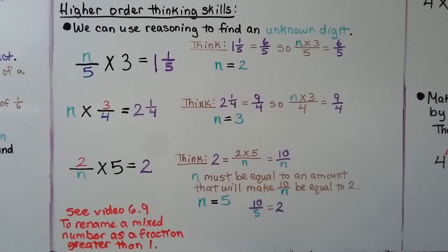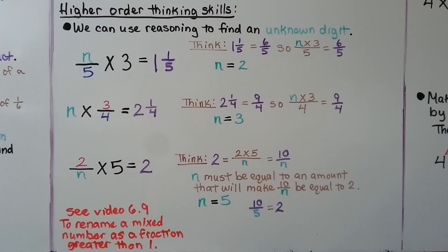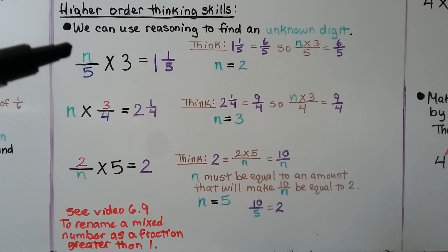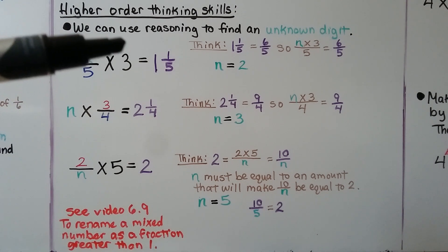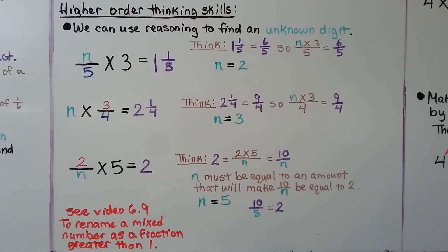Now let's try some higher order thinking skills. We can use reasoning to find an unknown digit. We're going to use n, a variable, to represent our unknown amount. We have n as a numerator, 5 as a denominator, and when multiplied by 3 whole, it's equal to 1 and 1 fifth.